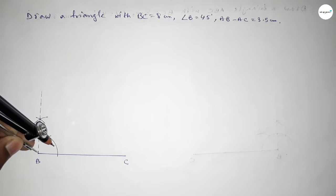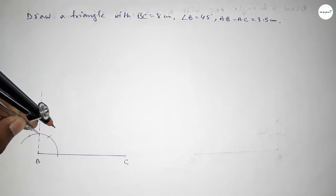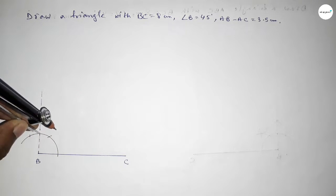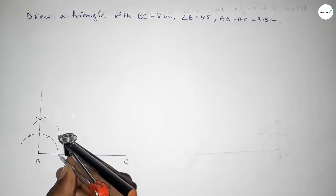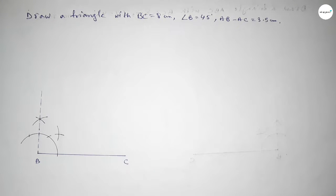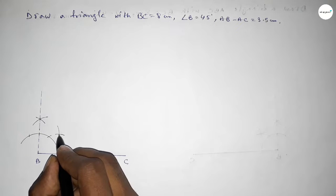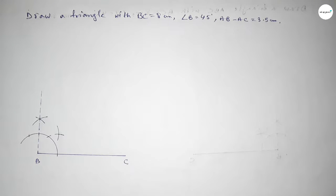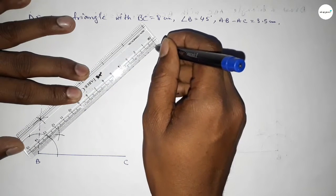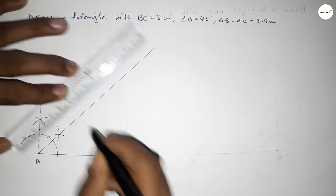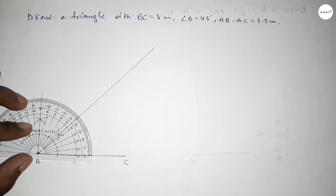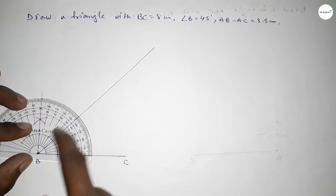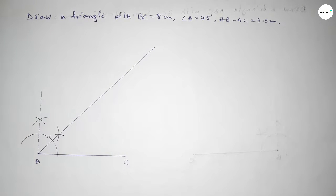Taking the same length, putting the compass here and drawing an arc. Again with the same length, putting the compass here and cutting here, so both curves intersect at a point. Joining this side to get a 45 degree angle. Now checking whether it is 45 or not — this is perfectly 45 degrees.